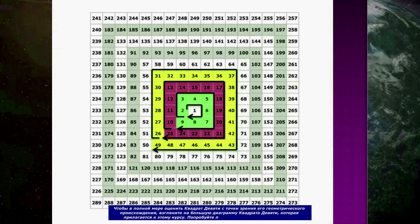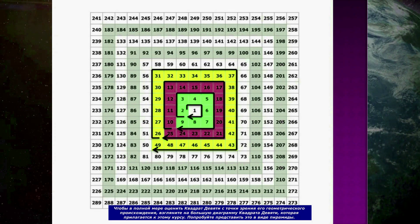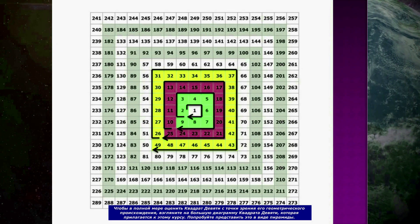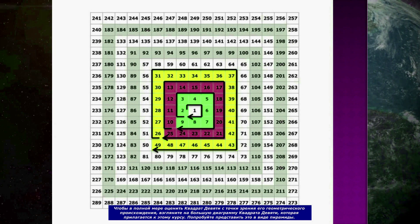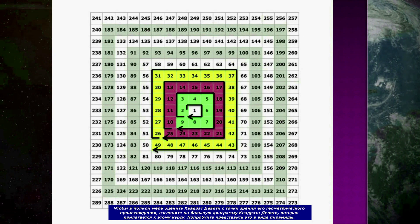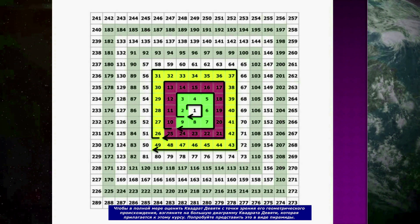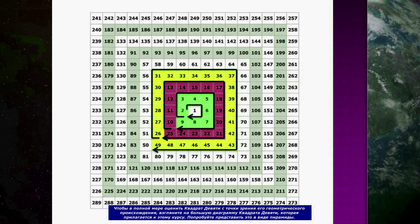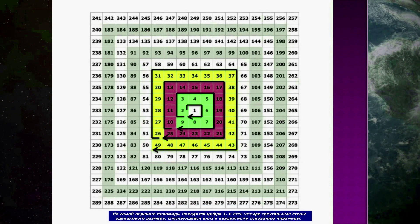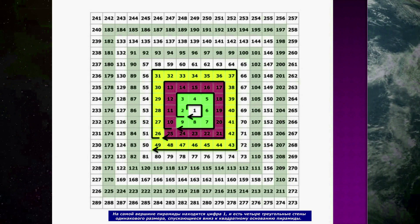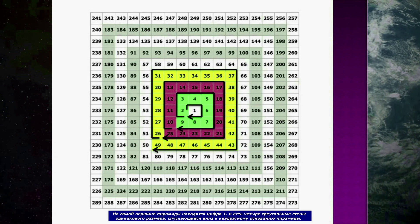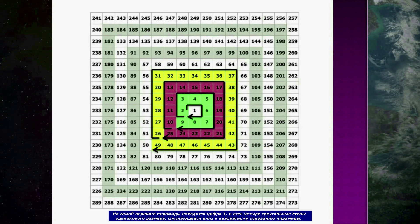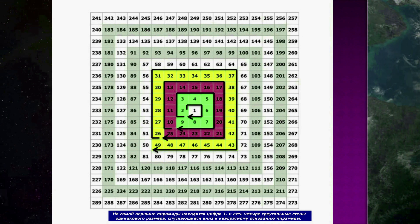To fully appreciate the Square of 9 in terms of its geometric origins, take a look at the large chart of the Square of 9 that is included with this course. Try to visualize it as a pyramid. At the very top or apex of the pyramid is the number 1 and there are four equal-sized triangular walls descending down to the pyramid's square base.